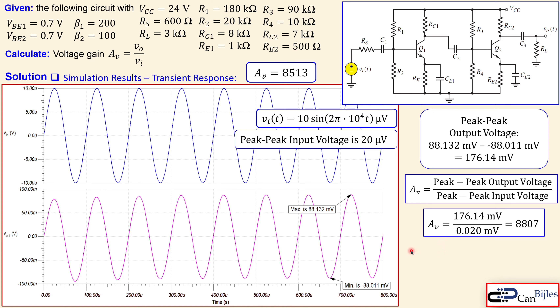This concludes our example of the two-stage amplifier using two BJTs in cascade with common emitter configuration. We calculated the DC operating points, then used the small signal model in the AC analysis to find the voltage gain. If you have any questions or comments, please let me know. Please like and share this video to support the channel — thanks for watching, see you next time.